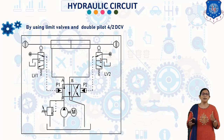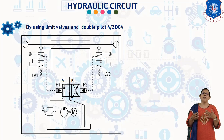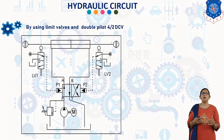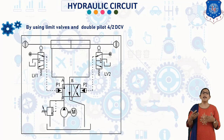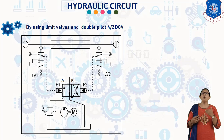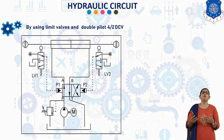The piston rod, while reciprocating, actuates the limit valves, which in turn actuate the 4/2 direct control valve. In the first position of the 4/2 direct control valve, oil under pressure flows from P to A and B to T. Hence, the cylinder extends. By the end of extension, the cam on the piston rod presses limit valve LP1. There are two limit valves: LP1 and LP2. Oil under pressure flows to pilot P1 and shifts the spool of the 4/2 DCV to the second position.